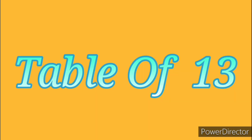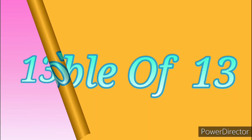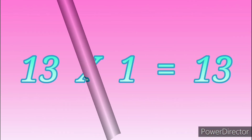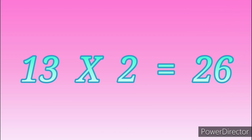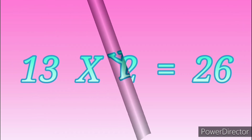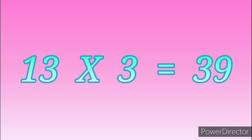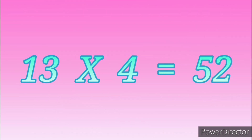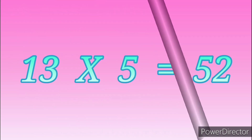Table of Thirteen. Thirteen ones are thirteen. Thirteen twos are twenty-six. Thirteen threes are thirty-nine. Thirteen fours are fifty-two.